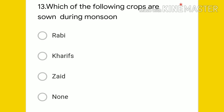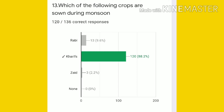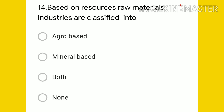Question 13: which of the following crops are sown during the monsoon season — rabi, kharif, zaid, or none? The answer is kharif, such as rice. 120 students gave the right answer — 88 percent.